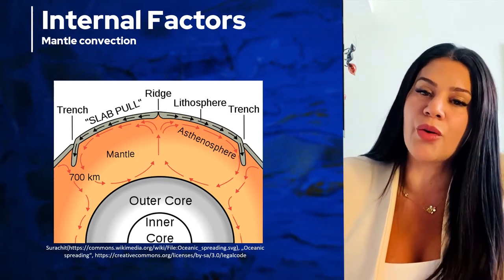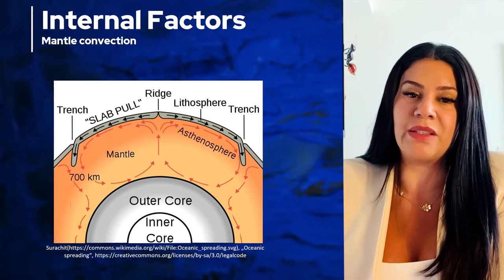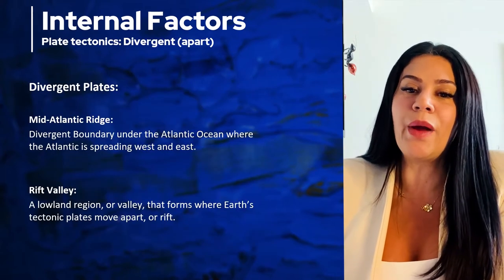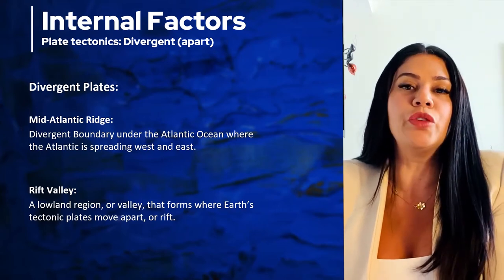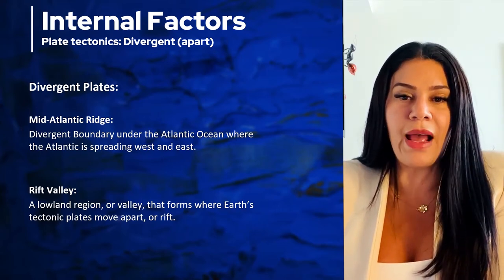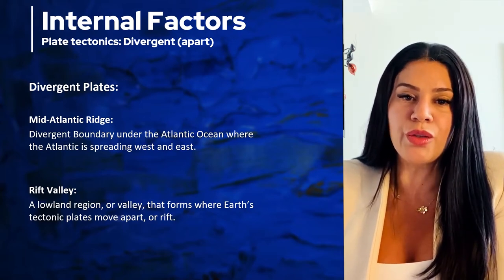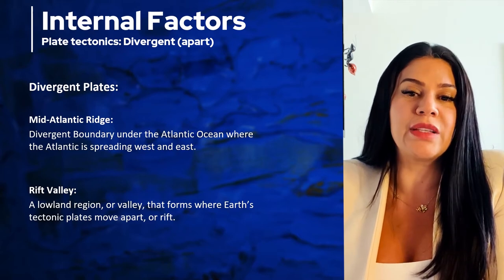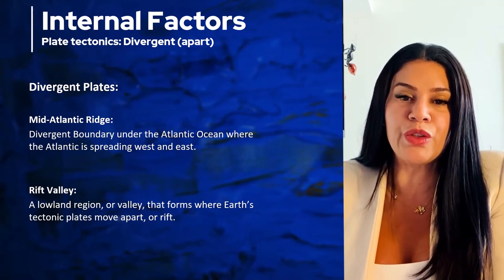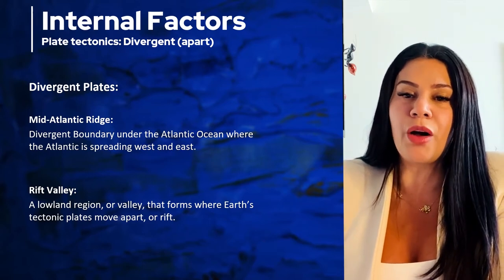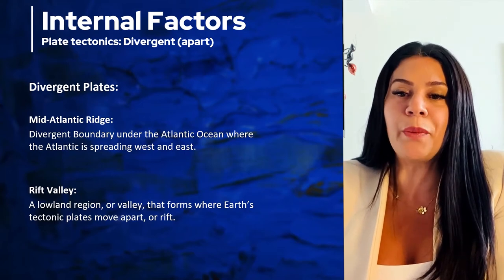There are three major ways that the plates of the earth move. They can move away from each other, as we see in the middle of the ocean — we call this divergence. They can move towards each other and collide — we call this convergence. And they can move alongside each other — we call this transform plates.